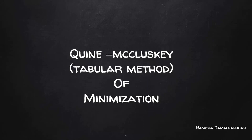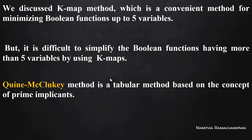Welcome back everyone. In this video we will discuss a new method of minimization of a given Boolean function called the Quine-McCluskey method, or the tabular method of minimization. The K-map method of simplification is convenient for Boolean functions up to 5 variables, but it is difficult to simplify Boolean functions having more than 5 variables using K-maps. In such situations, we can prefer this Quine-McCluskey method.